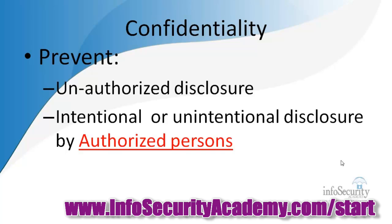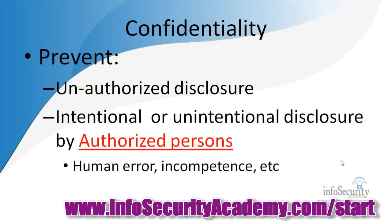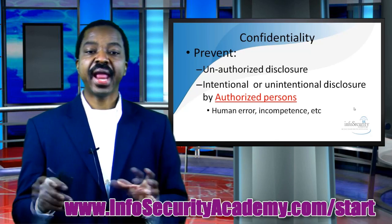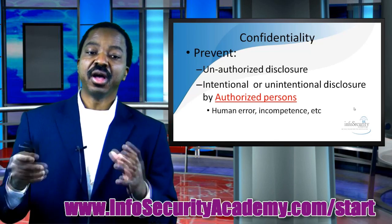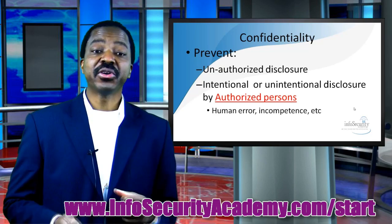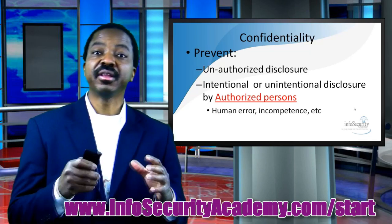This includes intentional or unintentional disclosure by authorized persons. You see, there are two ways to disclose information. First, you can have intentional disclosure, which basically means that somebody has disregarded the laws or regulations and decided to disclose information to a third party without authorization. On the other hand, there can be unintentional disclosure of information to others by authorized persons through simple mistakes.